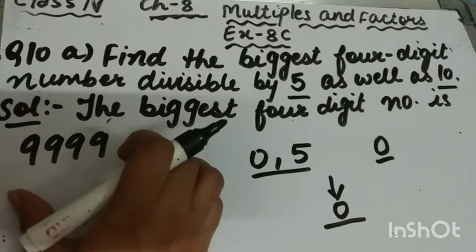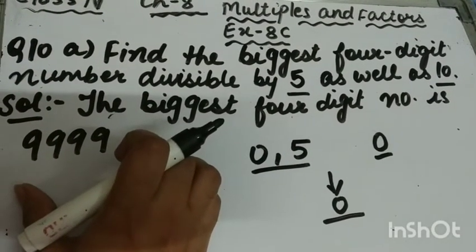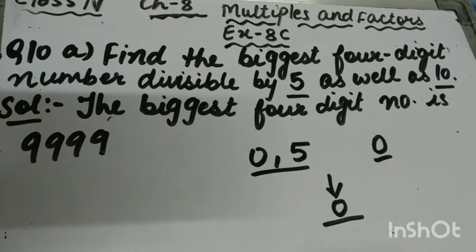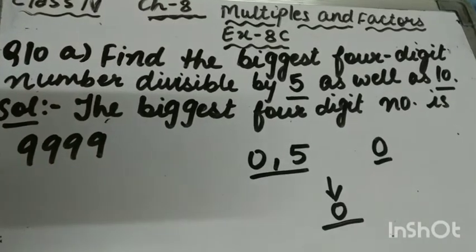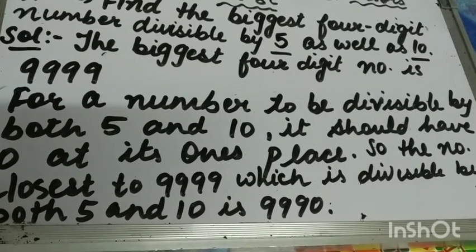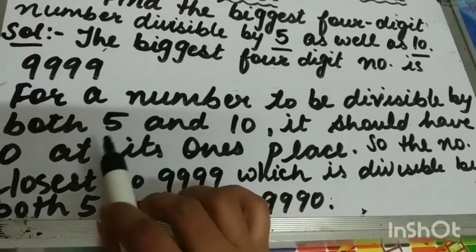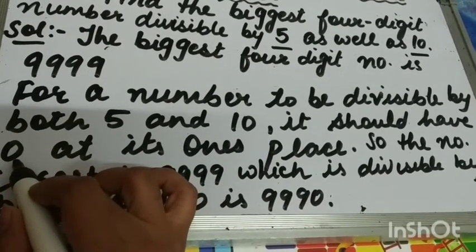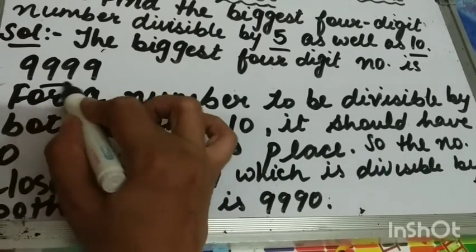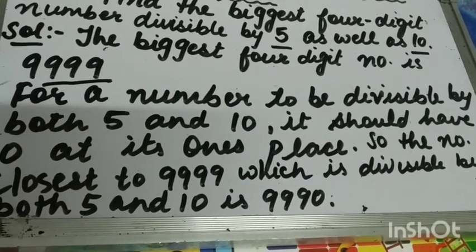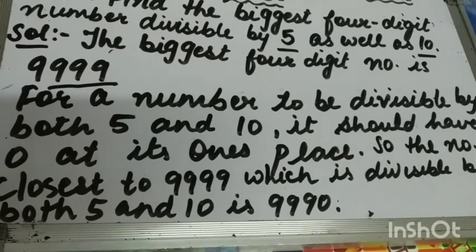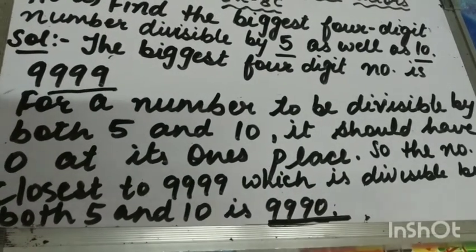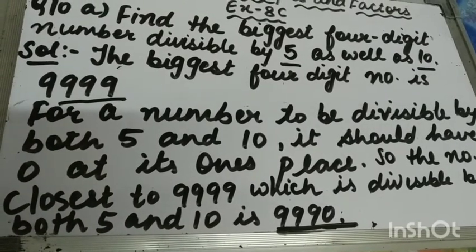So the number closest to 9999 that is divisible by both 5 and 10 is 9,990. This is the answer to part A of question number 10.